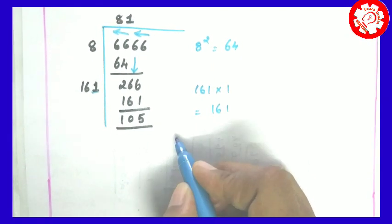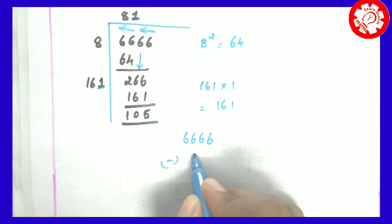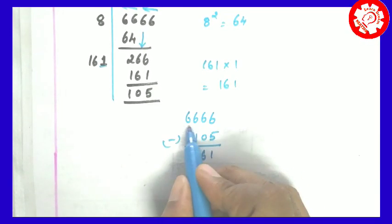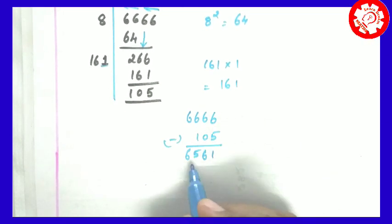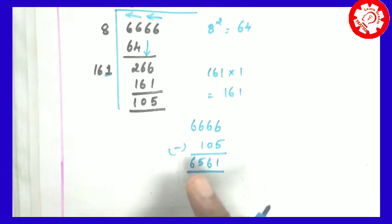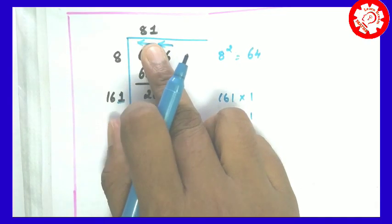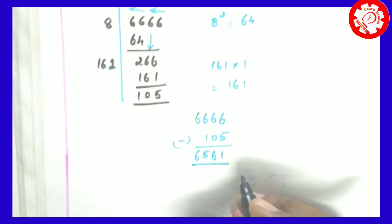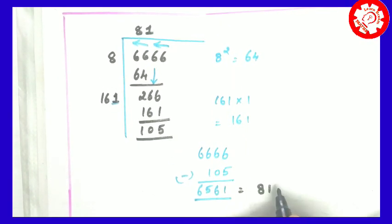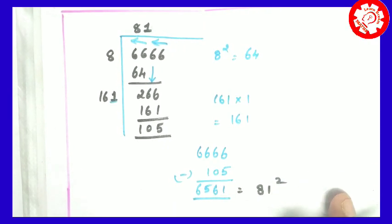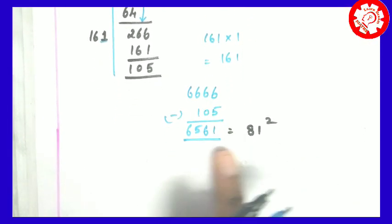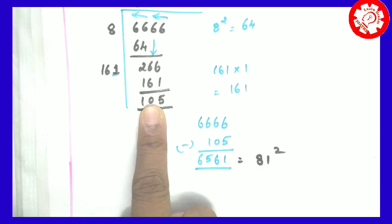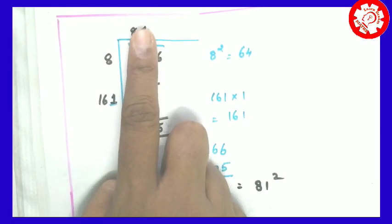Here we can see that 6666 minus 105 gives us: 6 minus 5 is 1, 6 minus 0 is 6, 66 minus 1 is 65. So in 6561, the square root is 81. We verify: 81 squared is 6561. And 6666 minus 105 is 6561, which is 81 squared. That is the answer.